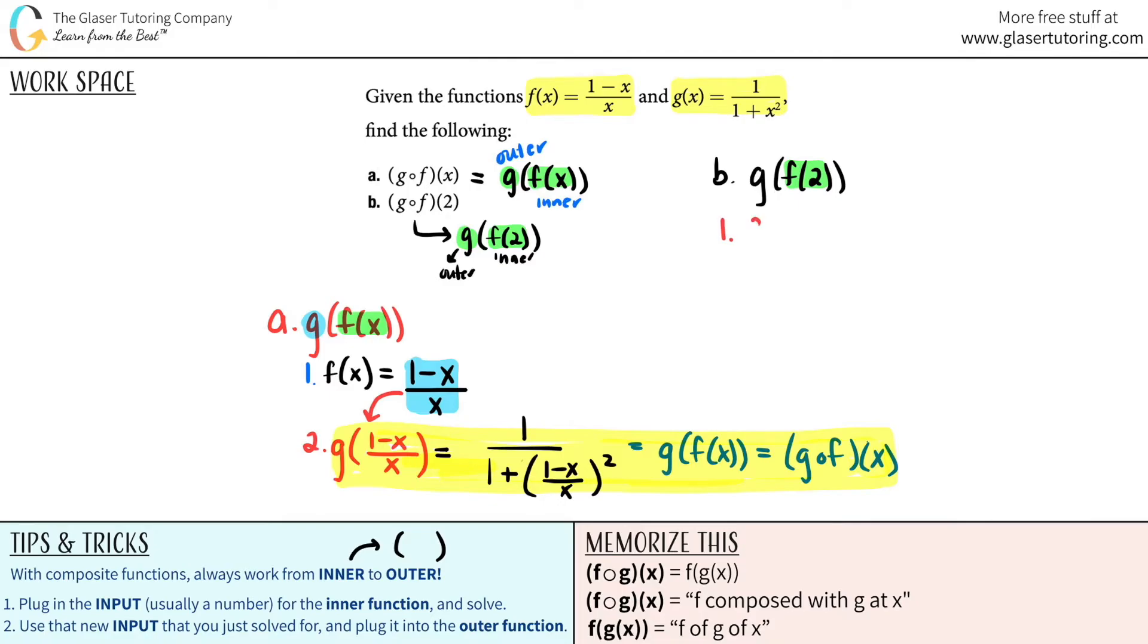So f of 2 is wherever I see an x for my f function I'm going to plug in a 2. So this I'm going to put a 2 here and this I'm going to put a 2 here. So it's going to be 1 minus 2 over 2 and simplify. 1 minus 2 is a negative 1 divided by 2. So I get negative 1 half.